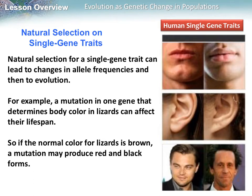Single gene traits lead to changes in allele frequency and then evolution. Examples of single gene traits include lip protrusion and earlobe attachment. A mutation in a gene for lizard body color could affect their lifespan. If the normal color for lizards is brown, a mutation could produce red and black forms, so the mutation changes the color.